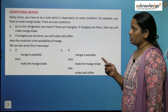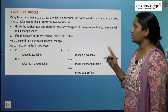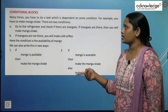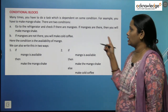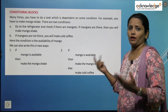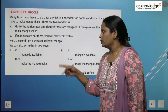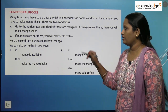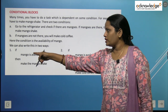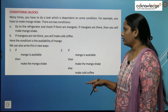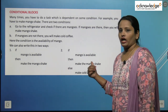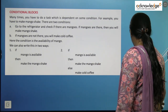Next is conditional blocks. Many times you have to do a task which is dependent on some condition. For example, to make a mango shake: go to the refrigerator and check if there are mangoes. If mangoes are there, then make a mango shake; if not, make a cold coffee. Here the condition is the availability of the mango. This can be written in two ways: 'if mango is available, make a mango shake,' or 'if mango is available, make a mango shake, else make cold coffee.'